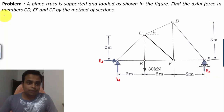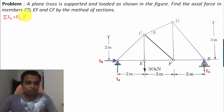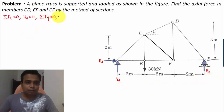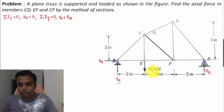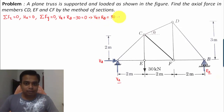To find HA, VA, and RB, I'm going to use three equations of equilibrium. Starting with summation of Fx = 0: the only horizontal force is HA, so HA = 0. Next, summation of Fy = 0: we have VA upward and RB upward, both positive, minus 30 kN downward, giving VA + RB = 30. Let's call this equation number 1.